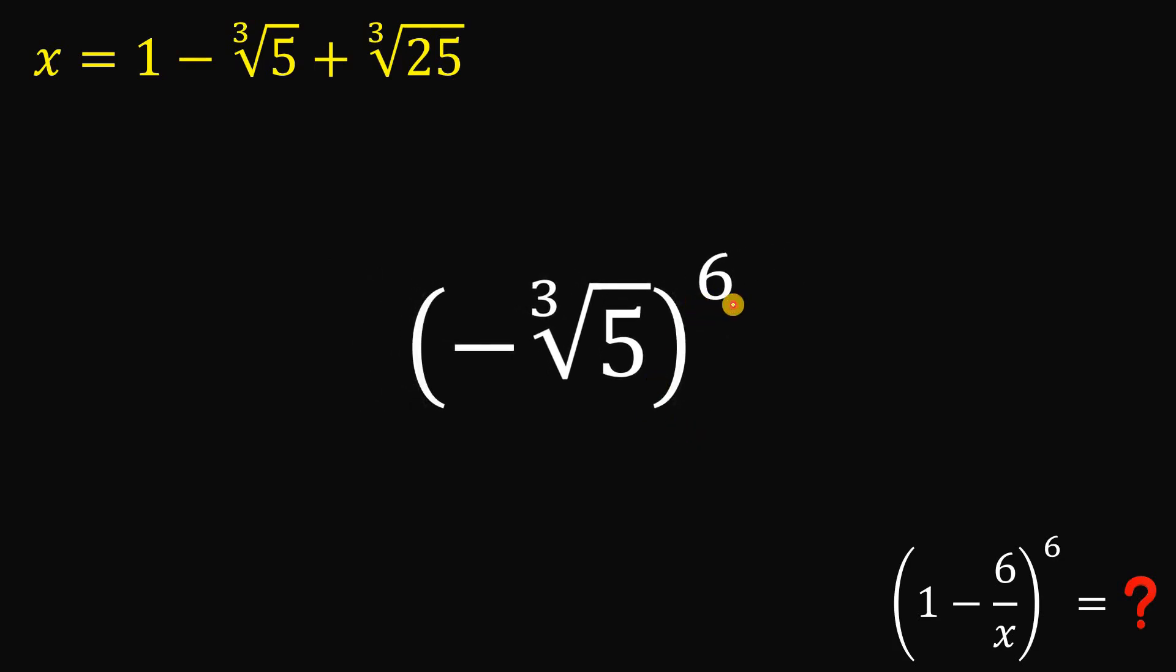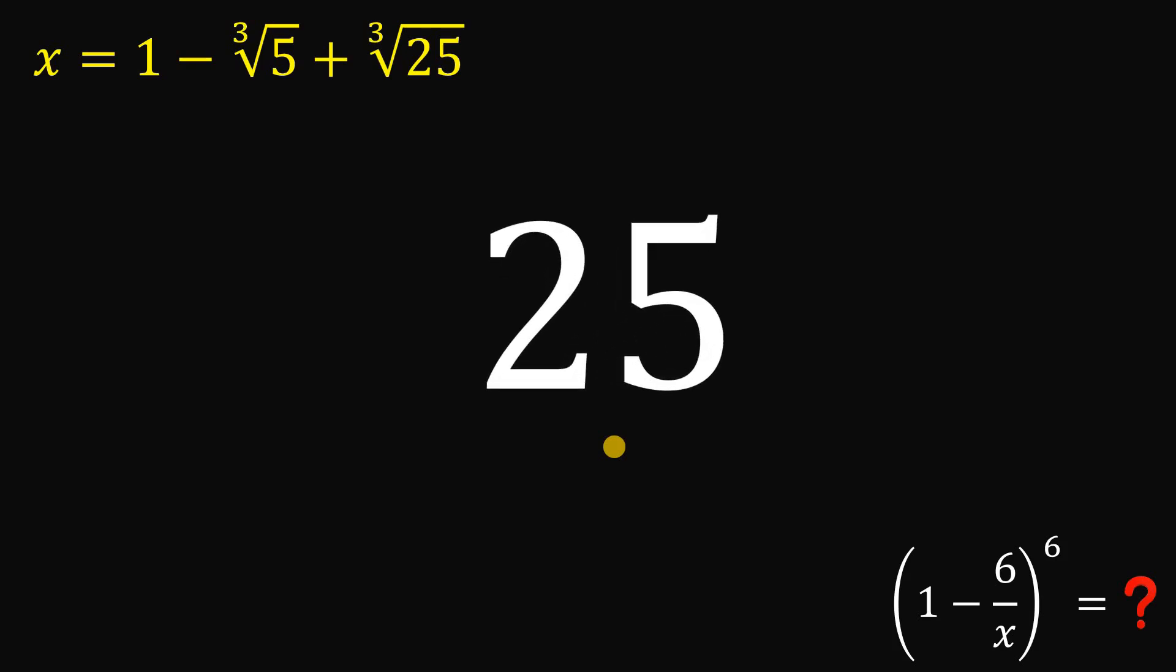Now, since the exponent is even, we know this value is a positive number. And if we multiply cube root of 5 six times, we get 5 raised to the power of 2. And this is just 25. And that is our answer to this question.